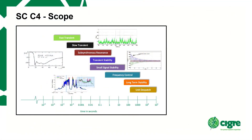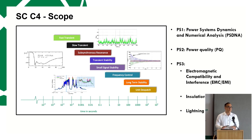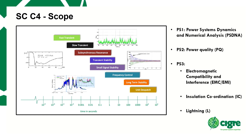Let me introduce the scope of C4. It covers a very wide range of activities. The three preferential subjects we have settled over the past three or four years include phenomena ranging from zero hertz or very close to zero hertz to several megahertz, which might seem like very unrelated islands. The main component that brings all these together is the focus on power system modeling and simulation, looking at components and the power system as a whole — what it takes to model and simulate the power system now and through the energy transition.